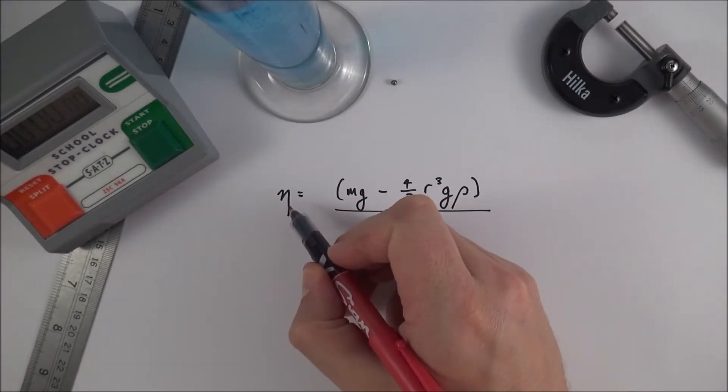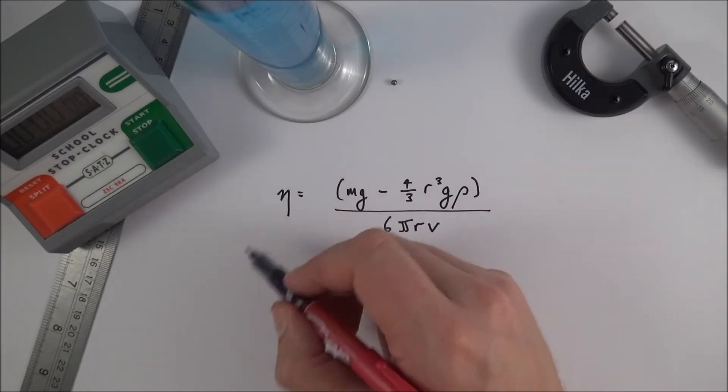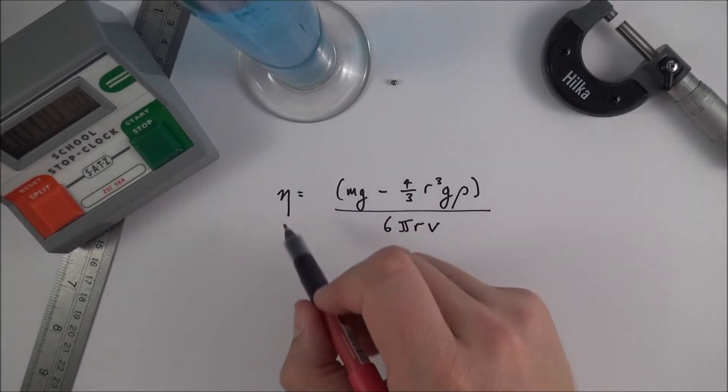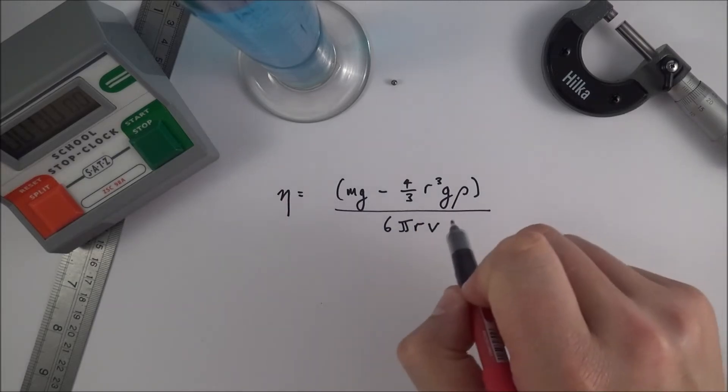So this thing here is the viscosity and this is a symbol which is eta, the Greek letter eta rather than mu which is like the opposite version. So this stands for the viscosity. So what else do we need to know?